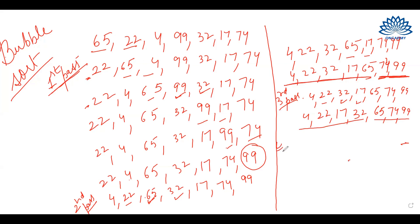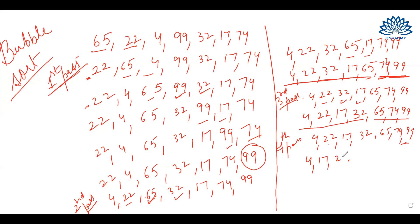Now in the 4th pass, what we'll do? We'll consider these 4 elements. 4 will be compared with 22. Since 4 is already smaller than 22, the list will remain as such. Now we'll compare 22 with 17. Since 17 is smaller than 22, we'll swap them. 17 comes here and 22 goes there. Now 22 is compared with 32. They are already at their places. So we can see that the list is sorted after the end of the 4th pass.